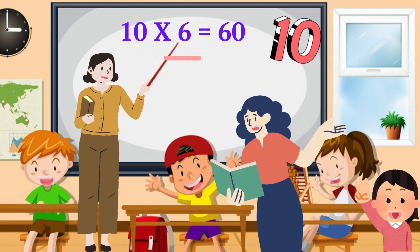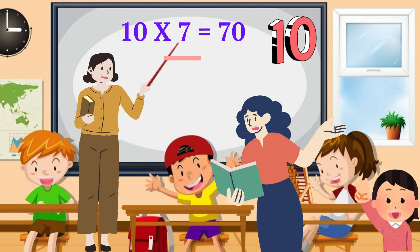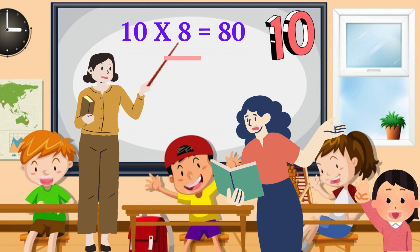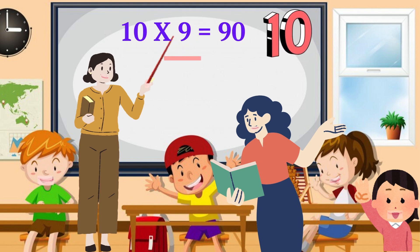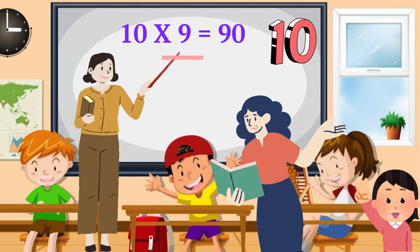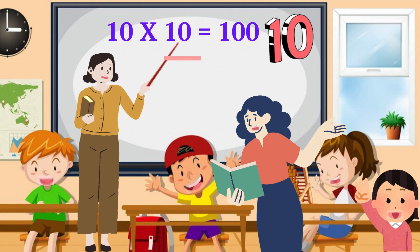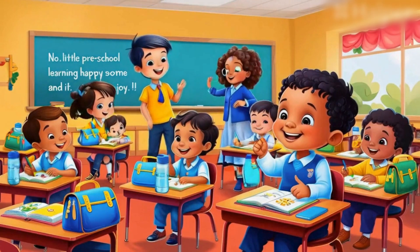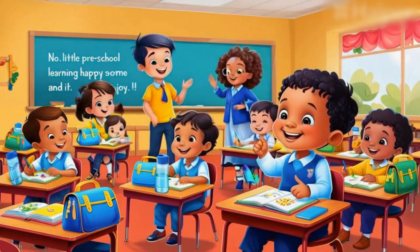10 sevens are 70, 10 eights are 80, 10 nines are 90, 10 tens are 100. Now let's review our tables.